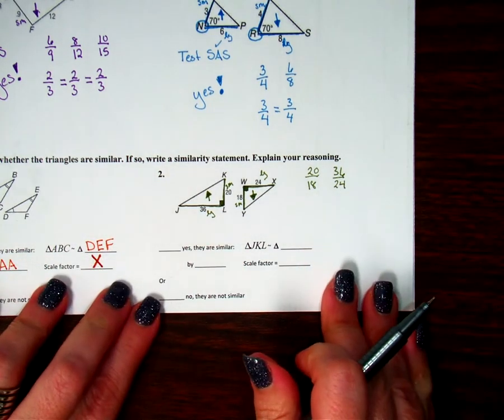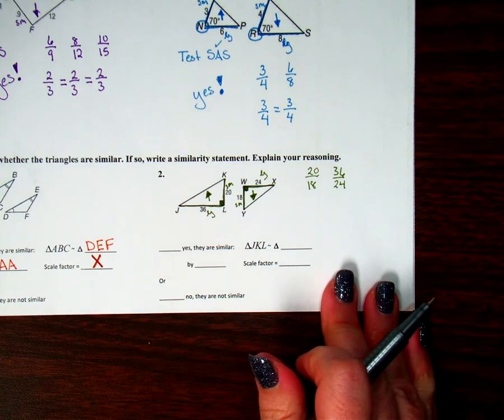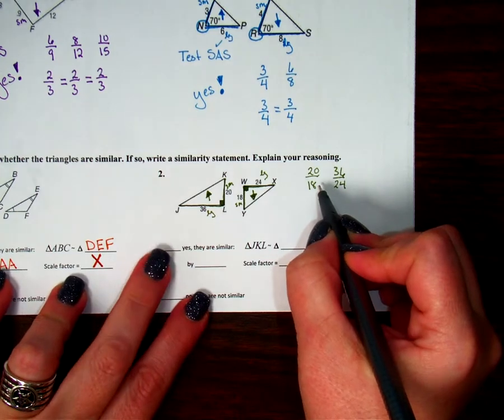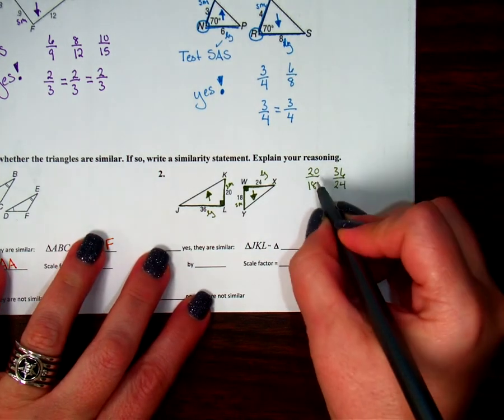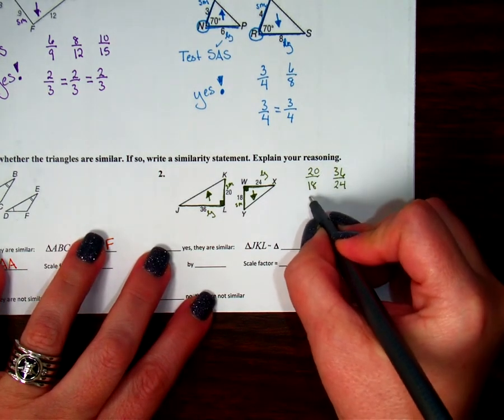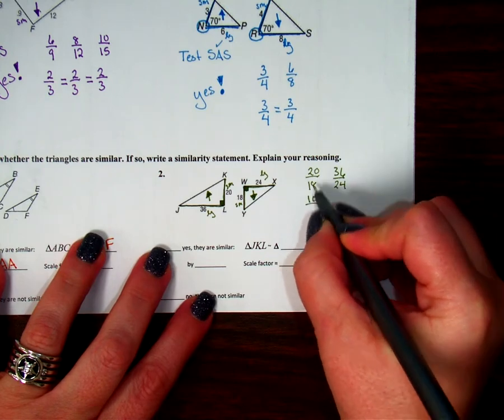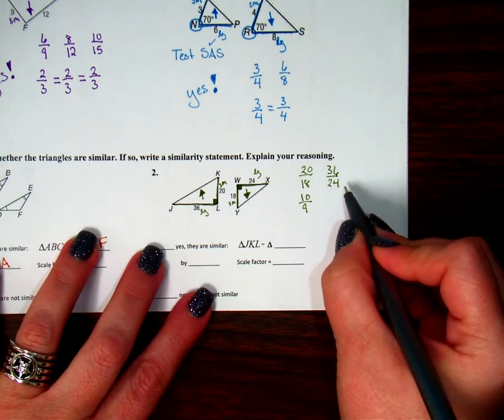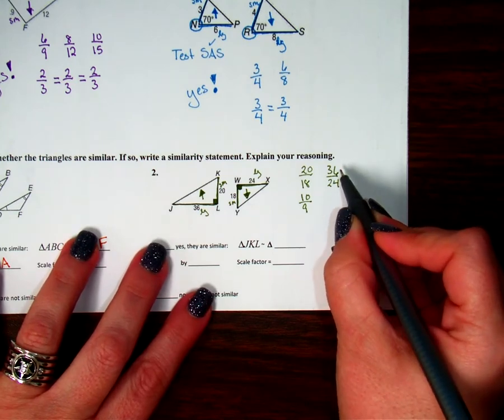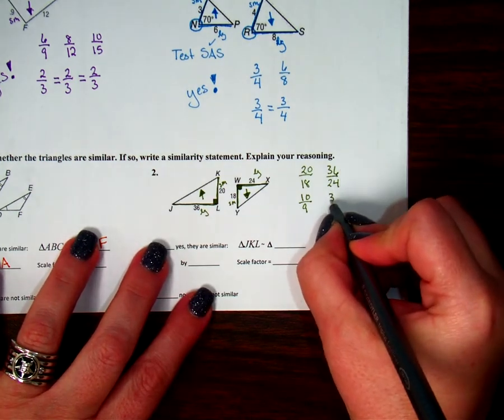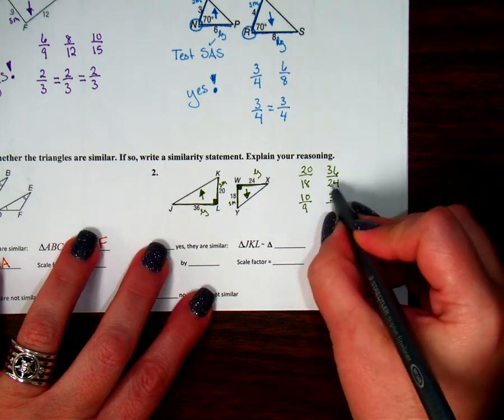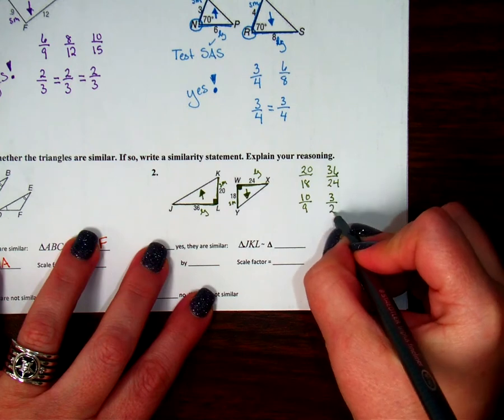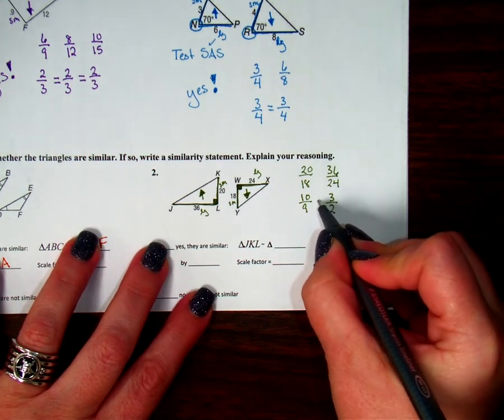So now we just need to reduce our fraction. 20 and 18, they're both divisible by 2. 20 divided by 2 is 10. 18 divided by 2 is 9. And that doesn't reduce any further. 36 and 24, both divisible by 12. 36 divided by 12 is 3, and 24 divided by 12 is 2. So notice, these are not equal.